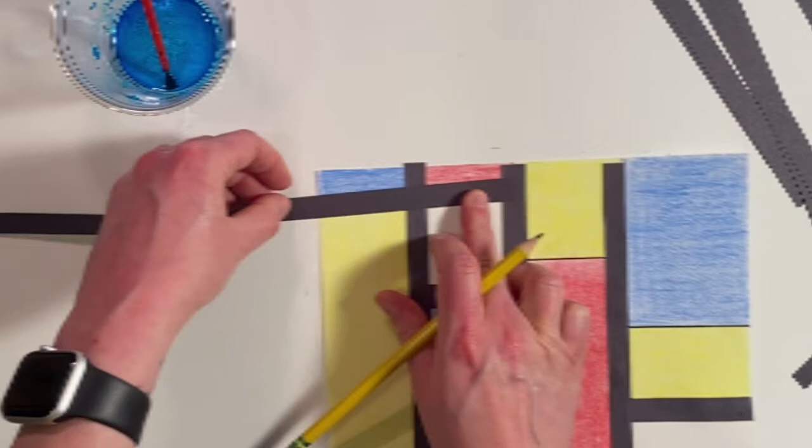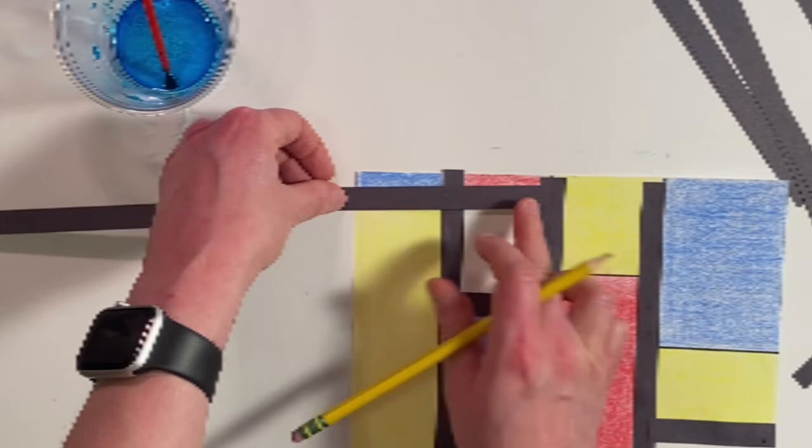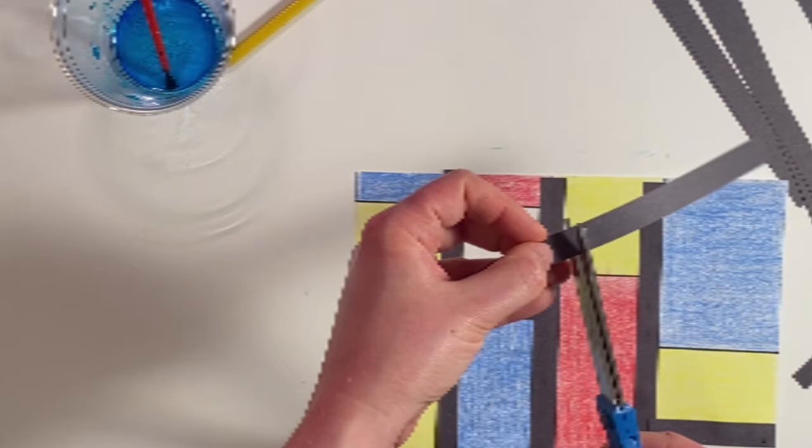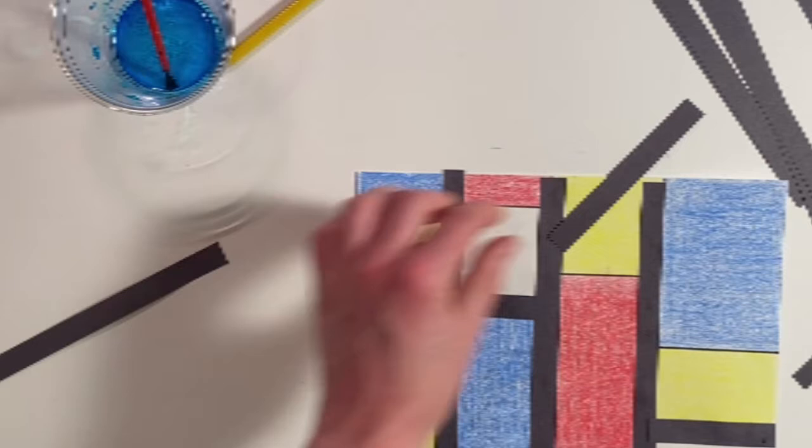See, I'm lining it up and seeing where the edge of the paper is. Then I'm taking my pencil and marking it right at the edge, and then cutting on the line that I just made. That's telling me how long that strip of construction paper needs to be to fit in that spot.